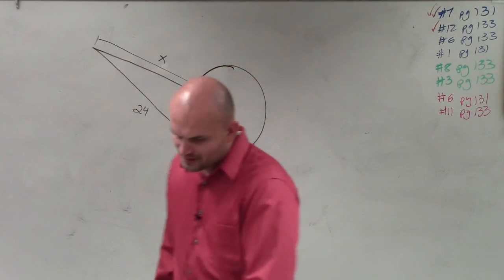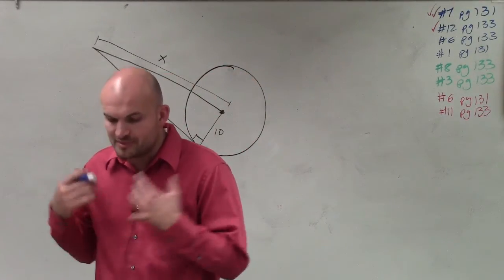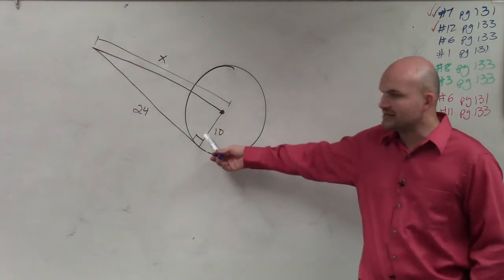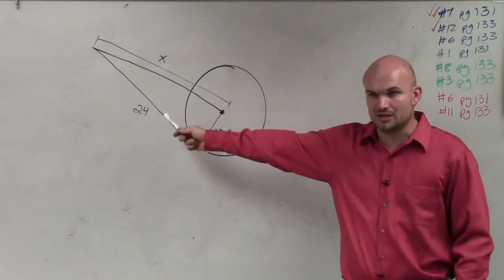In this example, they say assume that the segments that appear to be tangent are tangent, round to the nearest tenth. So therefore, you can see that this is going to be a tangent line.